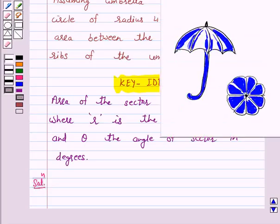It is given that an umbrella has 8 ribs which are equally spaced, assuming the umbrella to be a flat circle of radius 45 cm. Given: radius of the circle equals 45 cm.